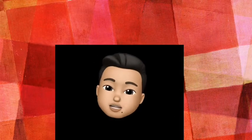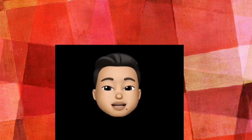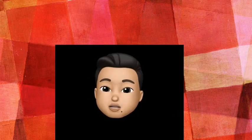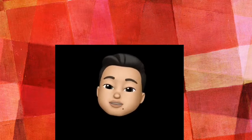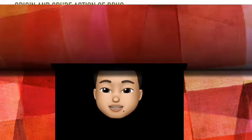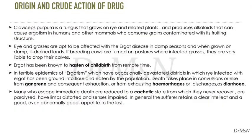Origin and action of the drug. By understanding the origin of the drug, you will get a basic concept and theme and you will never forget it. Claviceps purpurea is a fungus that grows on rye and related plants and produces alkaloids that can cause ergotism in humans and other mammals who consume grains contaminated with its fruiting structure.